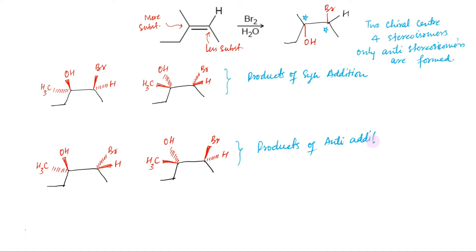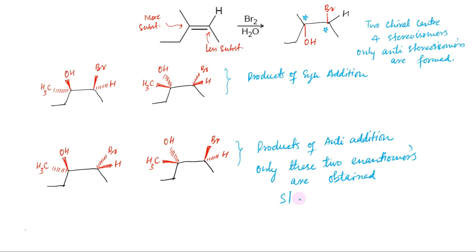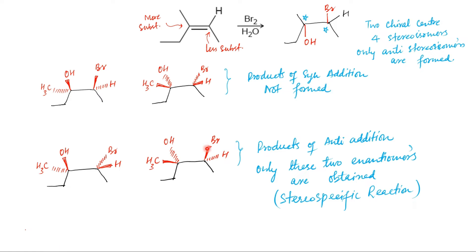Since halohydrin formation is anti addition of Br and OH, we expect only the pair of enantiomers that would result from anti addition. The syn addition enantiomers are not formed in this case. Thus, halohydrin formation is a stereospecific reaction — that is, the OH and Br will be installed on opposite sides of the pi bond. When drawing the products of halohydrin formation, make sure to consider both the regiochemical outcome and the stereochemical outcome. It is not possible to draw the products correctly without considering both of these issues.